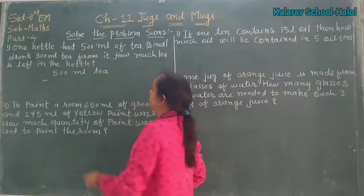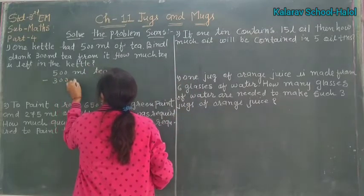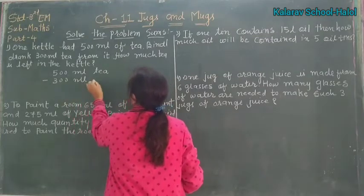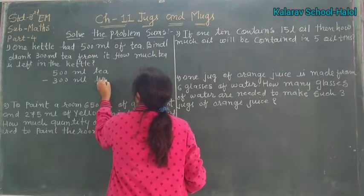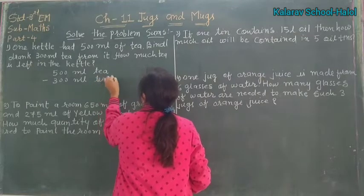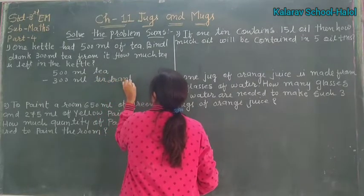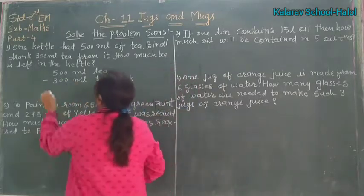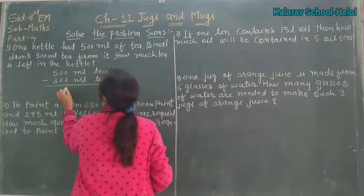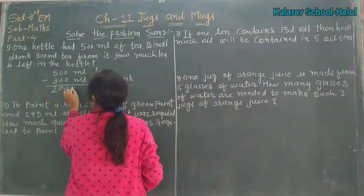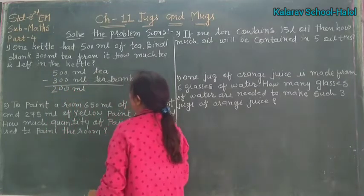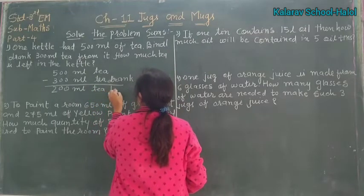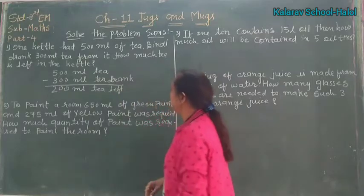Right? So, 300 ml kya tari ki? Minus. So, 500 minus 300: 0, 0, 5 minus 3 — 200 ml tea left.